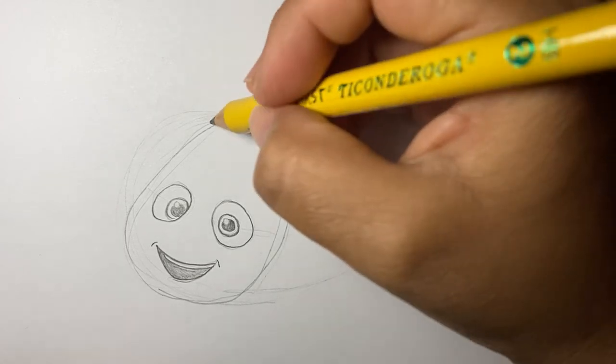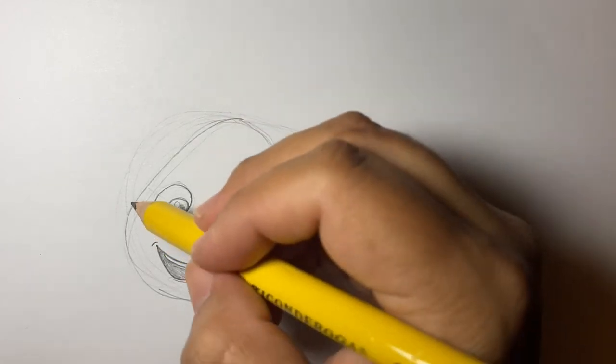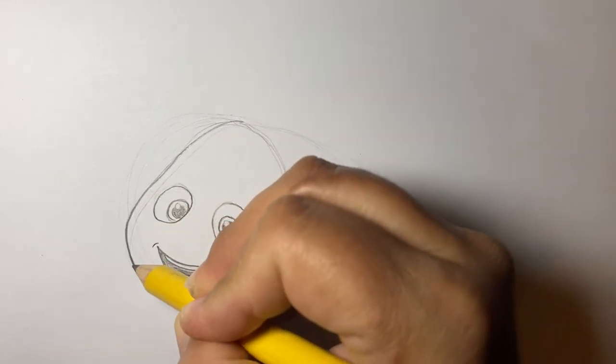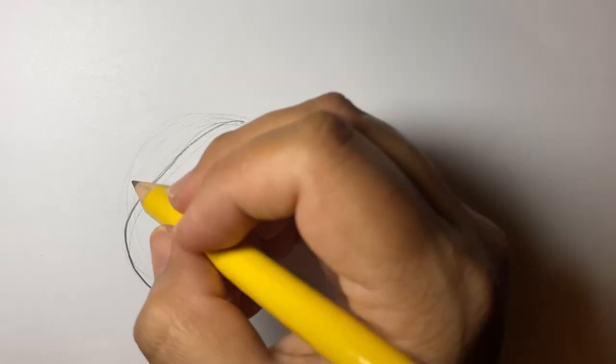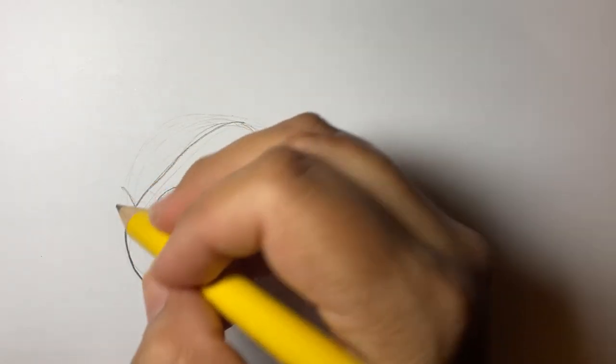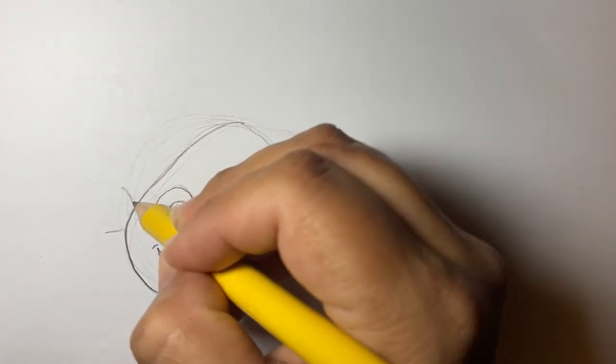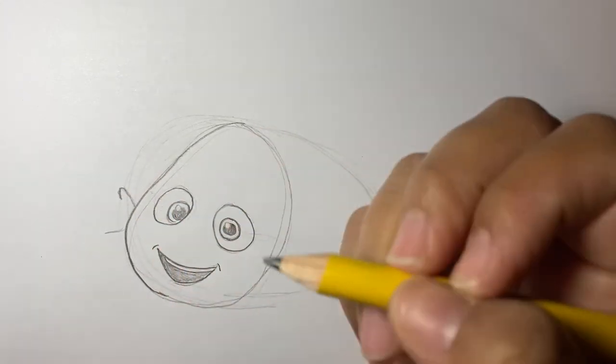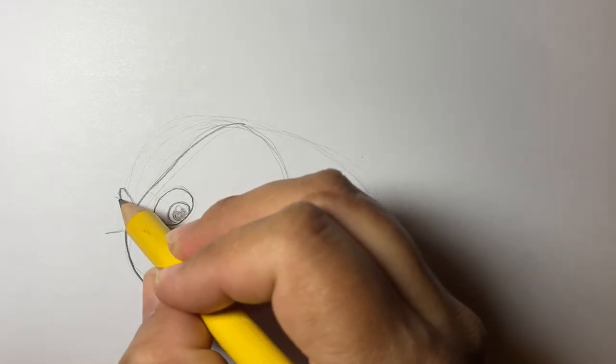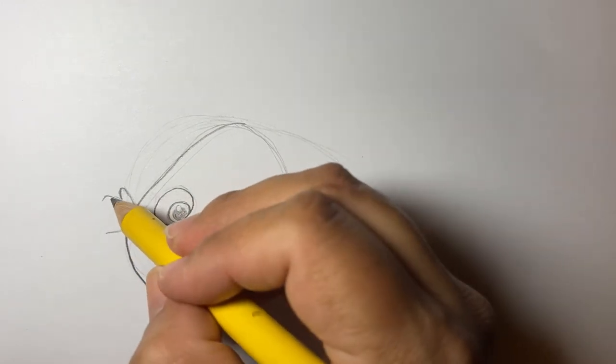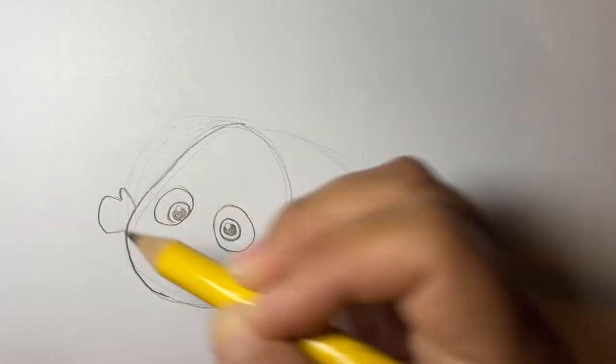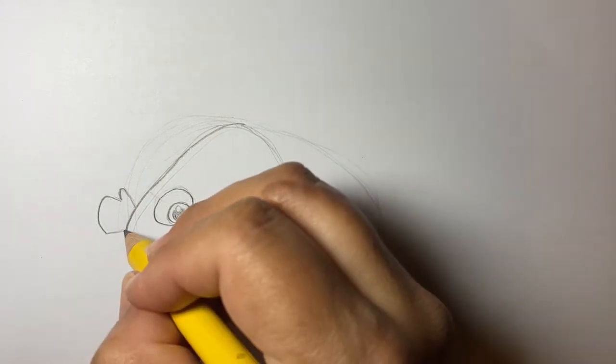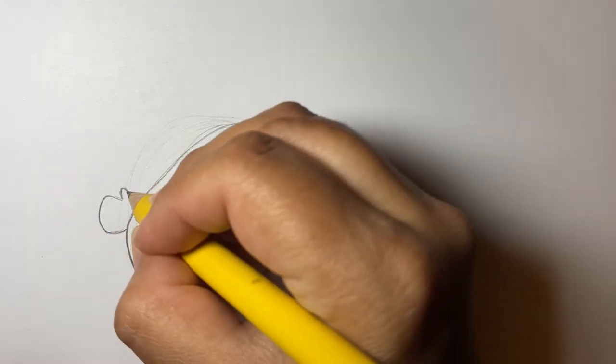Now we're going to, on this side, add his little fin, his little one, and it just comes out like this, like a fan like that, has one kind of like a little thumb, and then it goes out again. And then it looks like a little mitten.